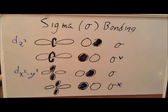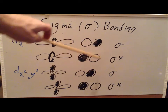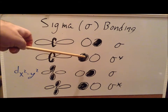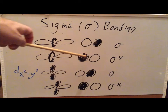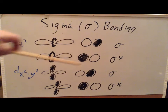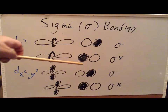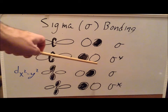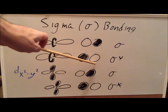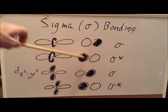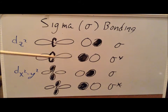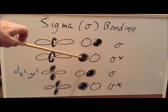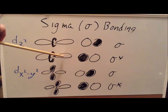By the same token, we could have a p orbital where the negative phase is oriented toward the positive phase of the d orbital. Since the two interacting lobes have opposite phases, that gives us a sigma antibonding combination — the same result as if a sigma antibonding orbital on a ligand were interacting with the d orbital on the metal.